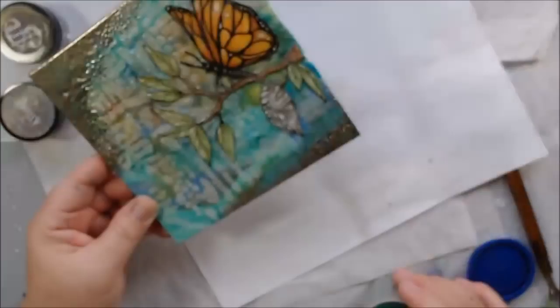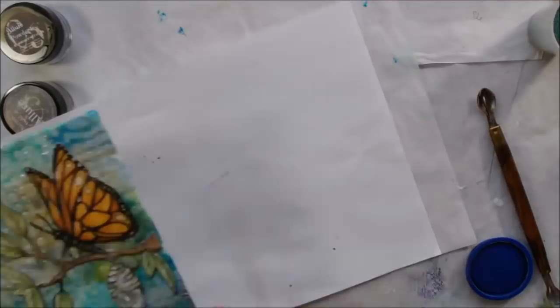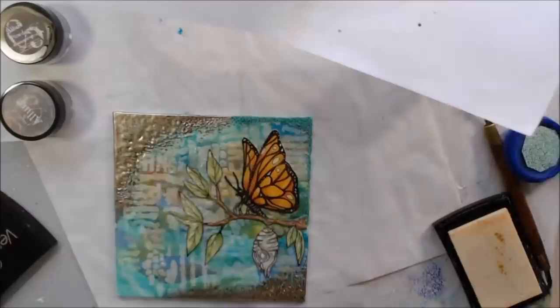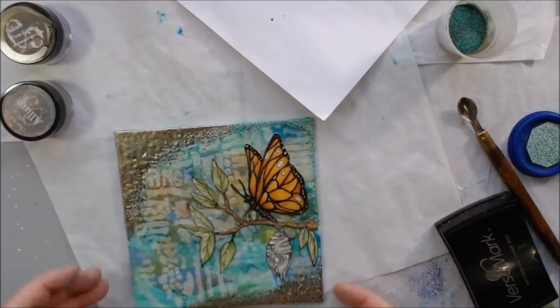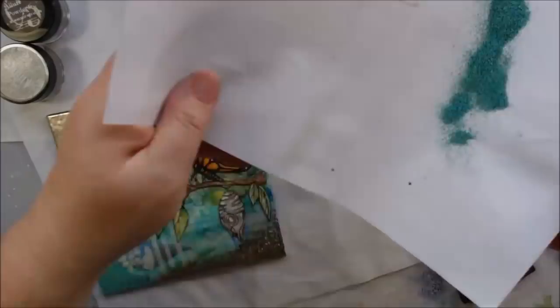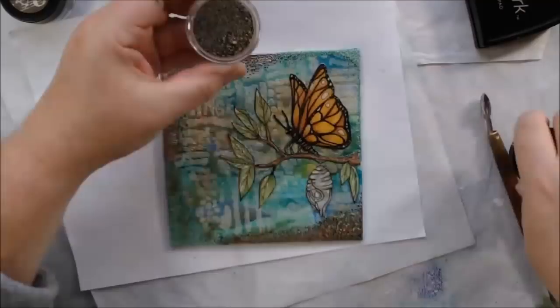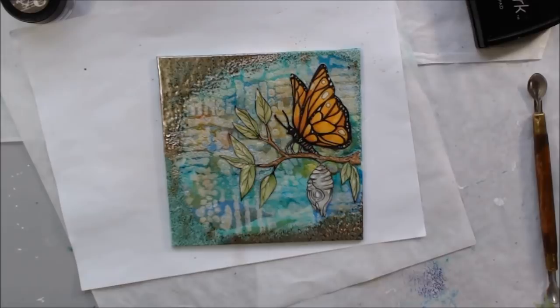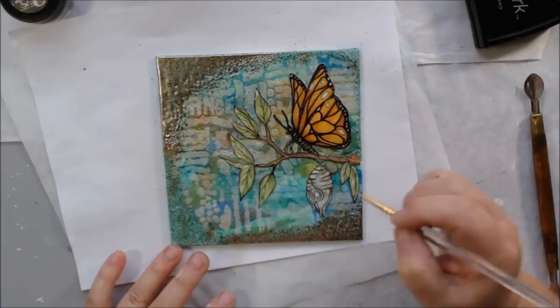Then I decided to use these Emerald Creek embossing powders I got at Creativation. One is called Charred Gold and the other is Hammered Metal. I also have this verdigris powder I custom blended a long time ago that looks like weathered copper. That one's not chunky, it's just regular grind, and I used it around the edges. It looks interesting and adds more texture.